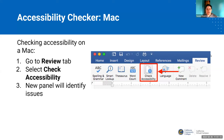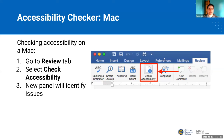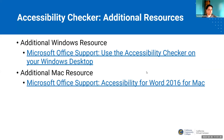Similarly on a Mac, same thing. Find the Review tab, then look for the accessibility checker — again a piece of paper, and it seems to be a clock of some sort, but anyway it says 'Accessibility Checker', which is a giveaway. And here are additional resources.